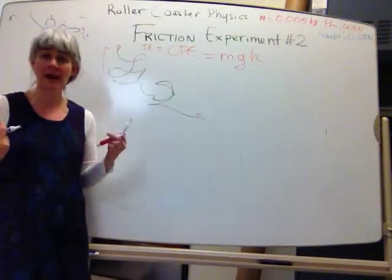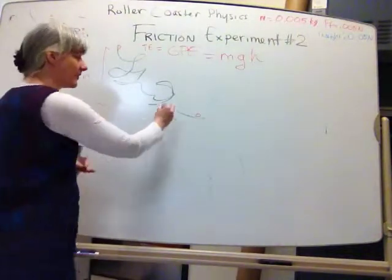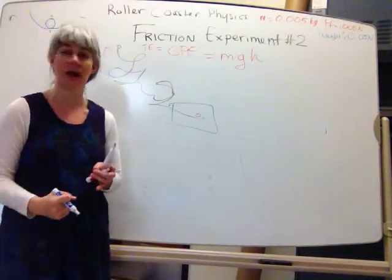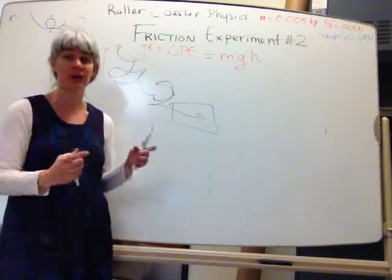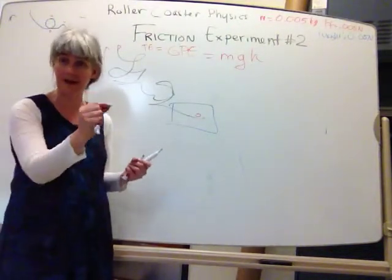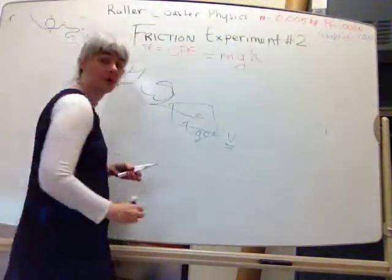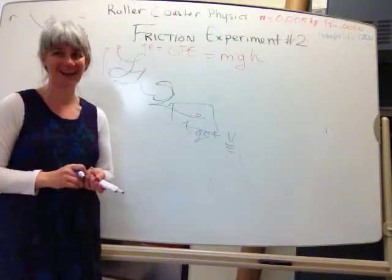A good way to check to see how much of that energy is left at the end is to use video physics on a near-to-the-end portion of the track, hopefully the very end. Open up video physics, film that portion of the track, set a good scale, put the dots in, and you want to get the velocity here off of video physics so that you can calculate the kinetic energy.